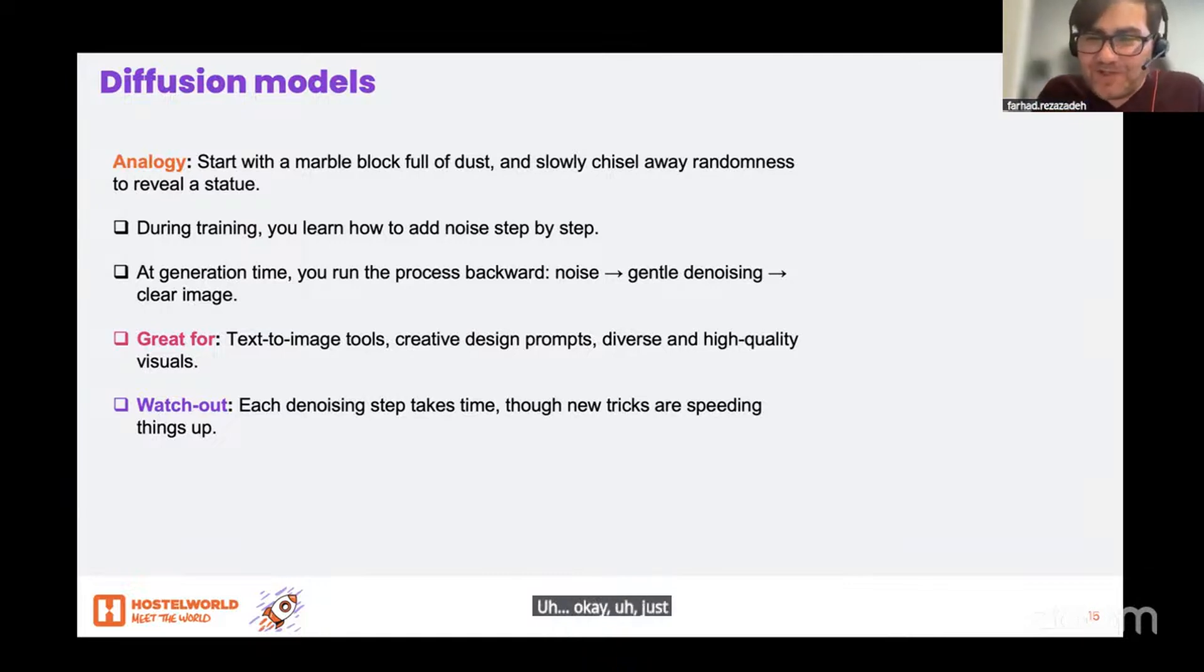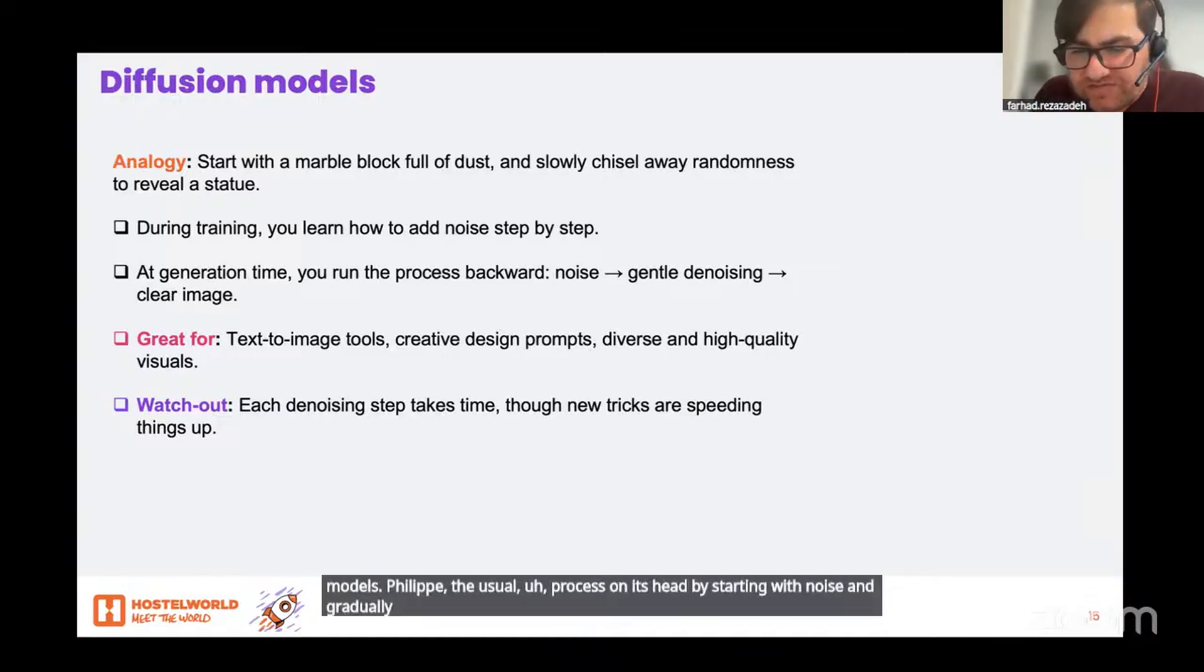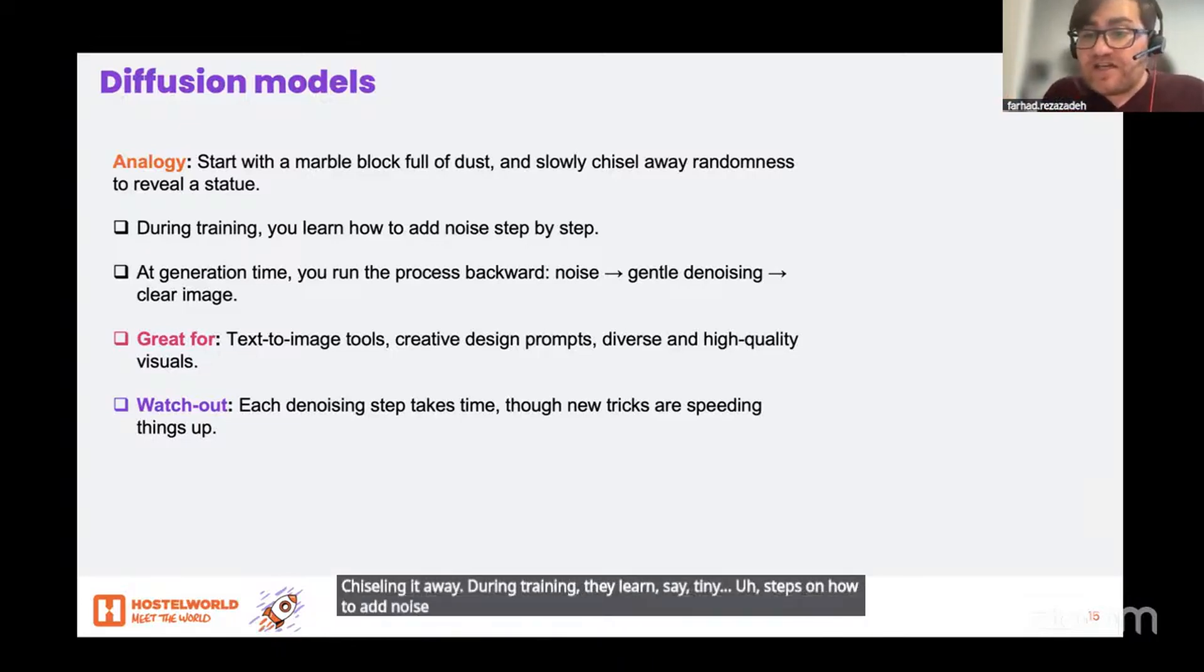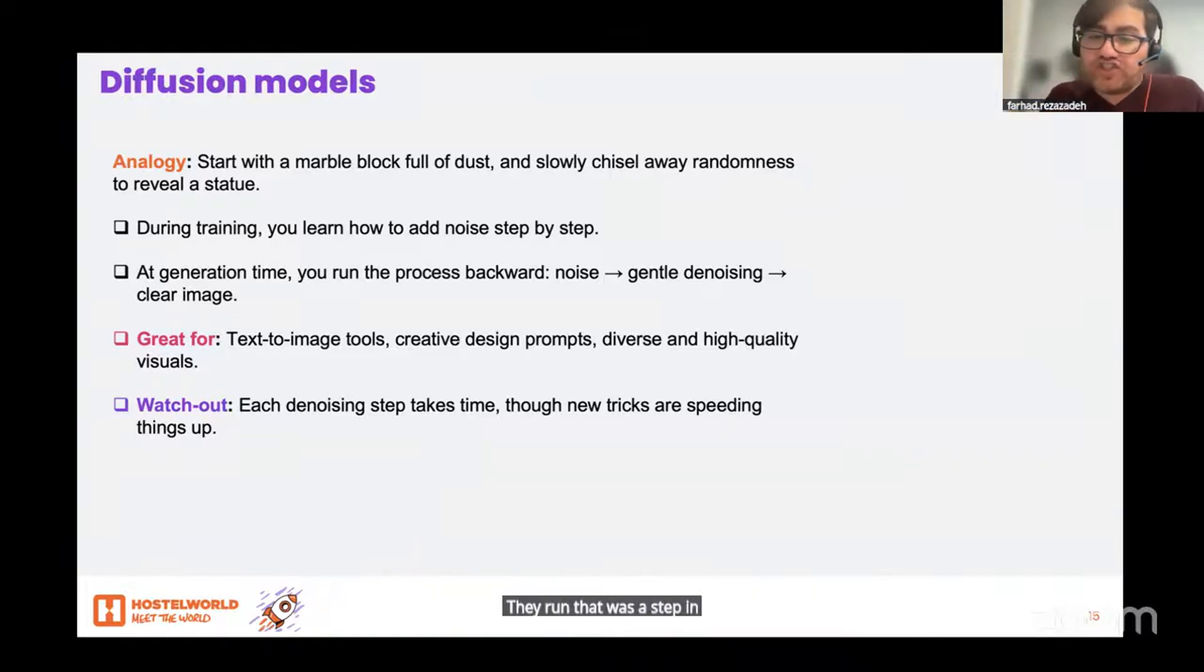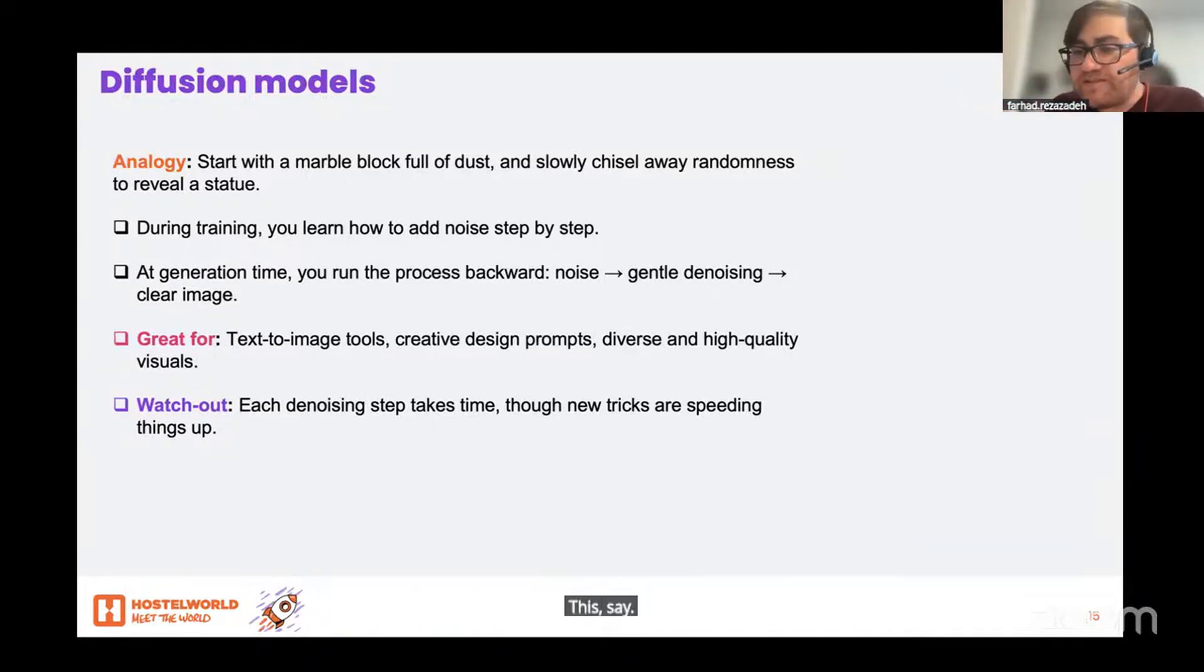I'll try to be more quick. We have also diffusion models. They flip the usual process on its head by starting with noise and gradually chiseling it away. During training, they learn tiny steps of how to add noise to an image. At generation time, they run those steps in reverse, turning random static into a clear picture.